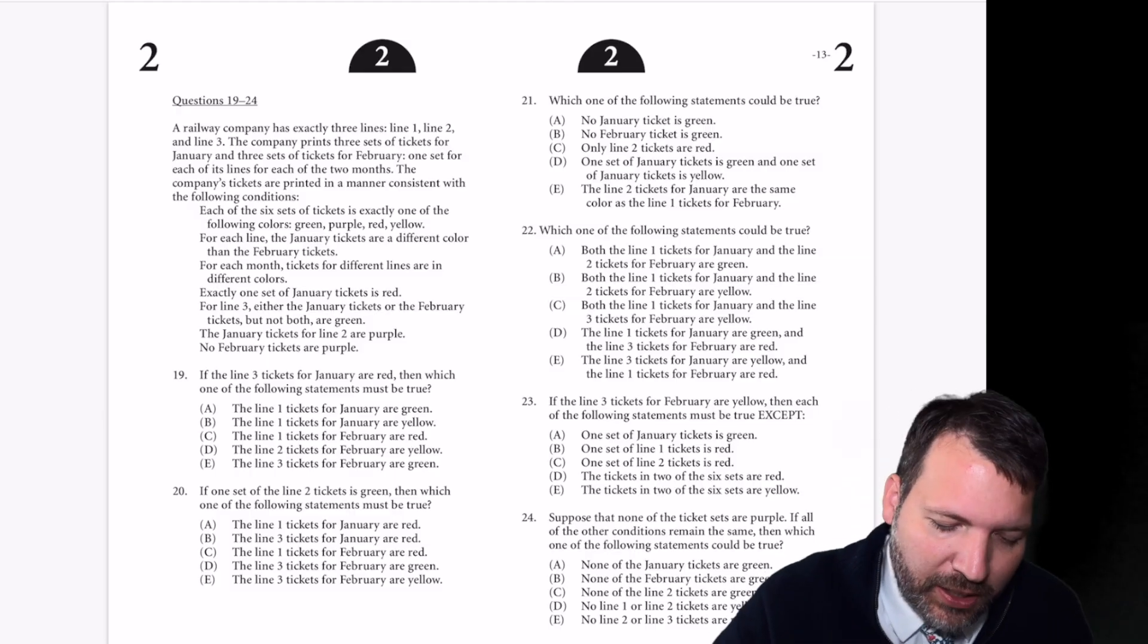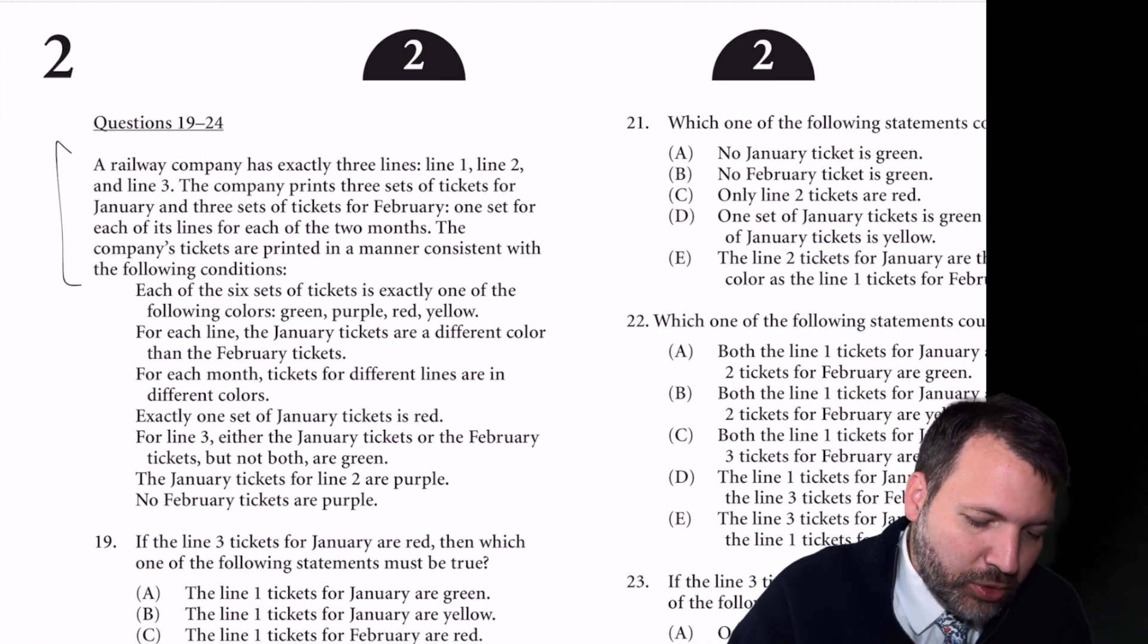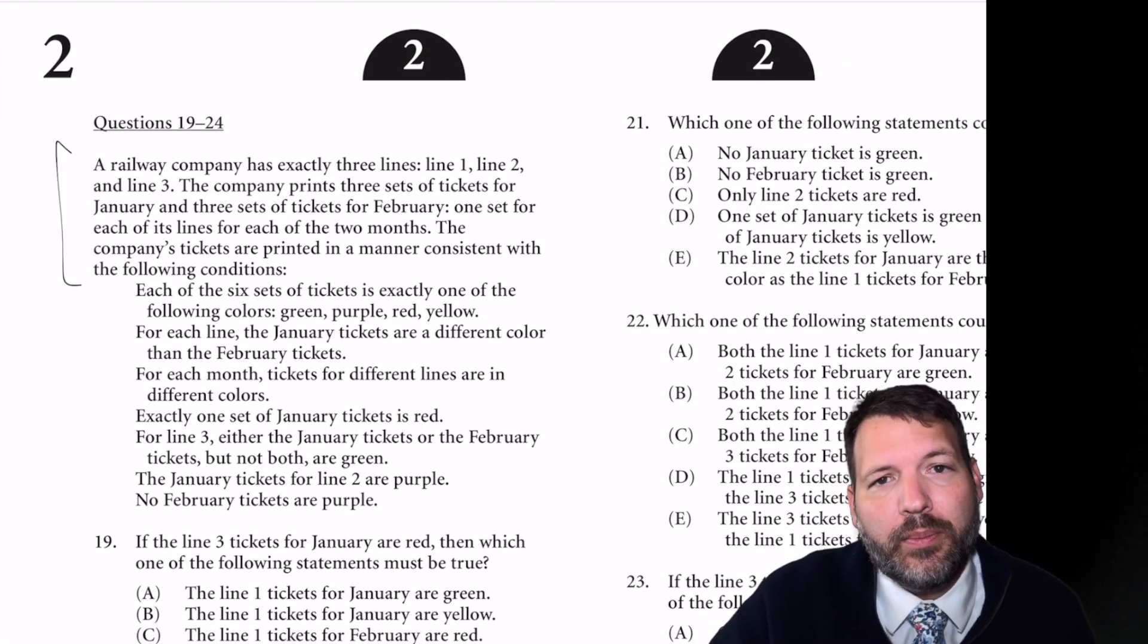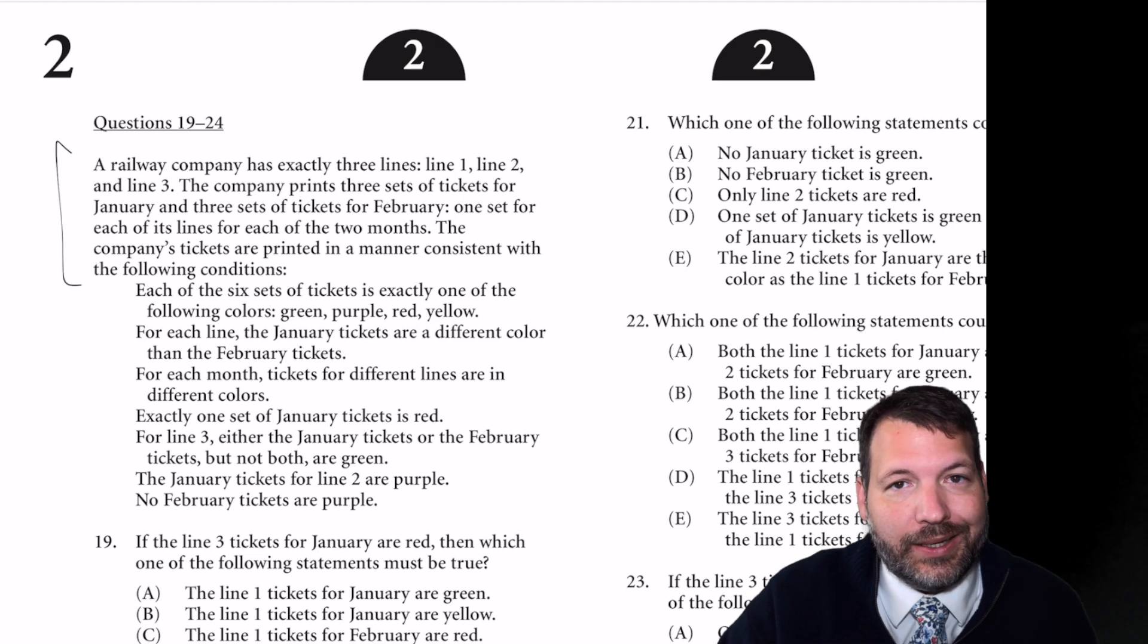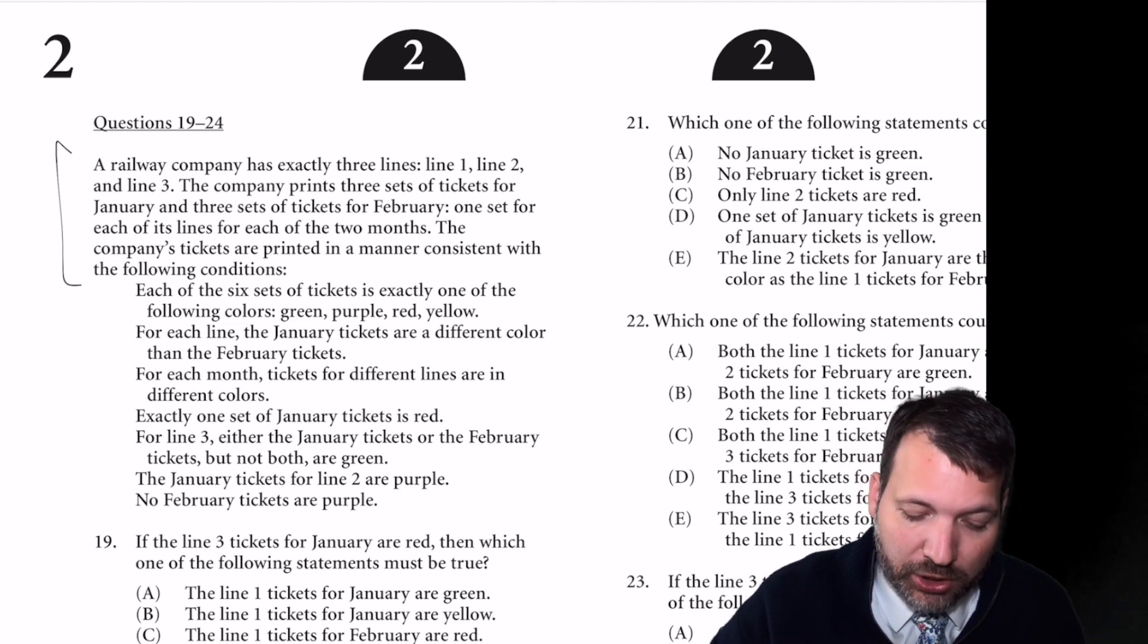In any case, I think that's enough intro. Let's go ahead and jump in here. We've got questions 19 through 24. Again, this is the fourth game of the second section of the June 1991 LSAT. A railway company has exactly three lines, line 1, line 2, and line 3. The company prints three sets of tickets for January and three sets of tickets for February, one set for each of its lines for each of the two months.